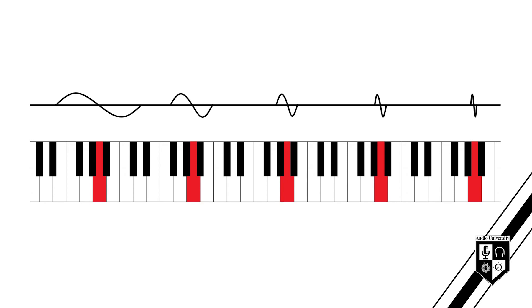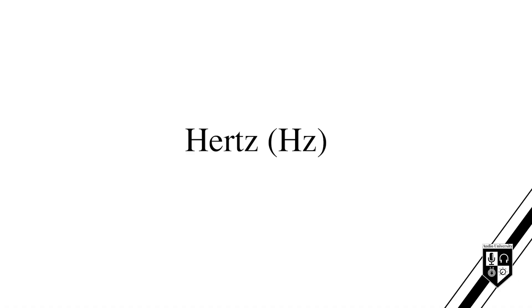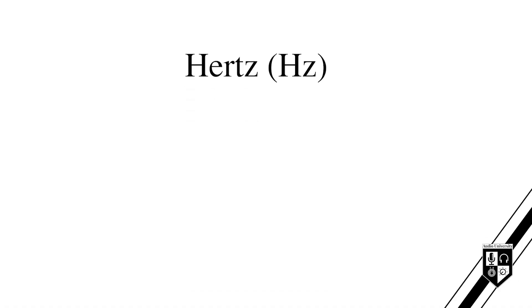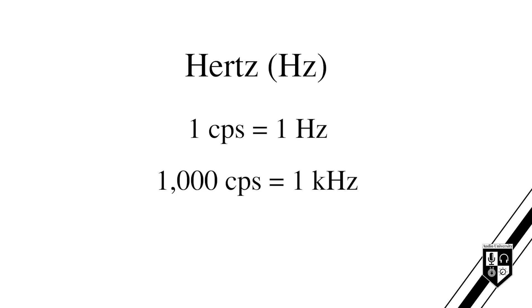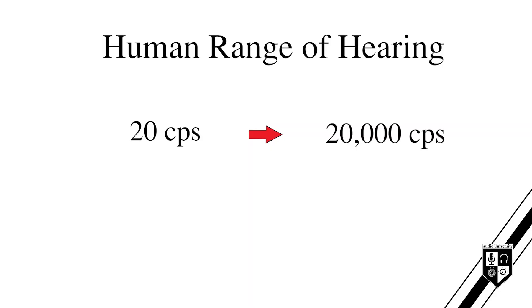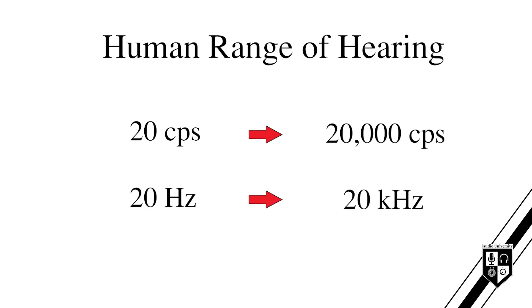If you cut the frequency in half, the pitch of the sound will decrease by one octave. Frequency is measured in hertz, abbreviated Hz. One cycle per second is one hertz. One thousand cycles per second is one kilohertz. Humans are capable of hearing sounds within the range of 20 cycles per second and 20,000 cycles per second — in other words, in the range of 20 hertz to 20 kilohertz.